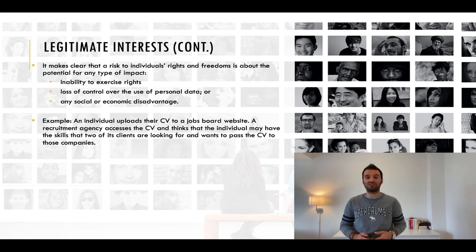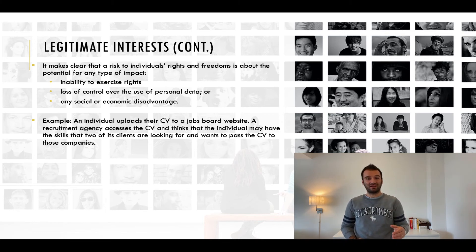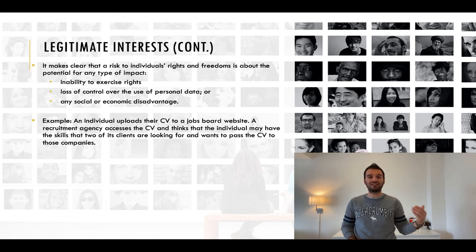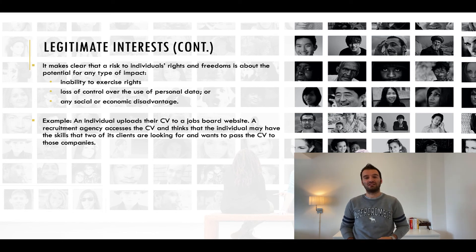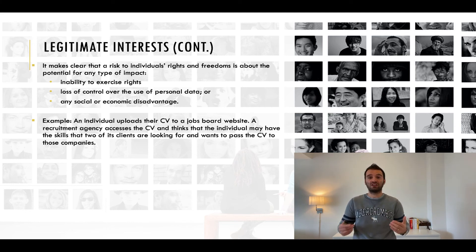Let's take an example. An individual uploads their CV to a jobs board website. A recruitment agency accesses the CV and thinks that the individual may have the skills that two of its clients are looking for, and wants to pass the CV on. It is likely in this situation that the lawful basis for processing for the recruitment agency and their clients is legitimate interest. The individual has made their CV available on a jobs board website for the express reason of employers being able to access this data. They have not given specific consent to identified data controllers, but they would clearly expect that recruitment agencies would access the CV and share it with their clients — indeed, this is likely to be the individual's intention. As such, the legitimate interests of the recruitment agencies and their clients to fill vacancies would not be overridden by any interests or rights of the individual, as those legitimate interests are likely to align with the individual's own interest in circulating their CV to find a job.